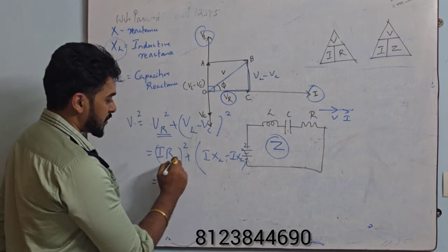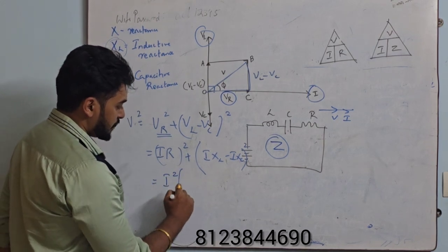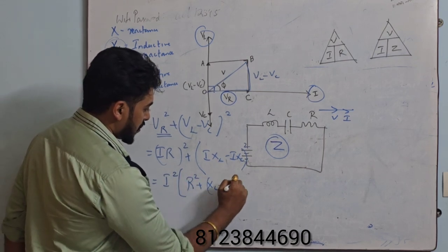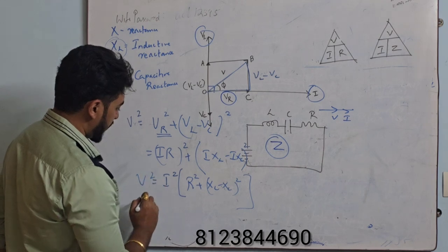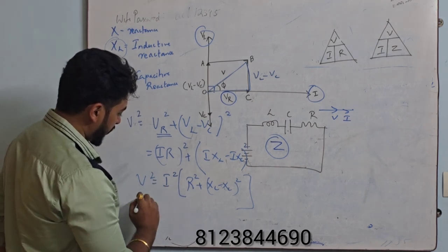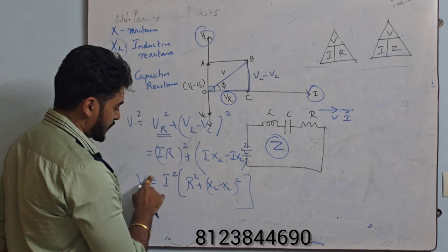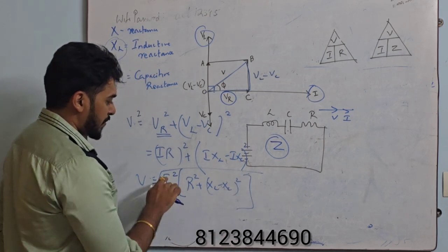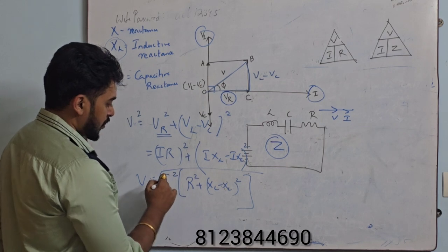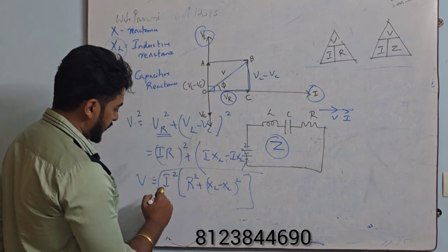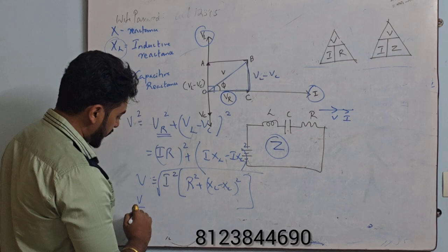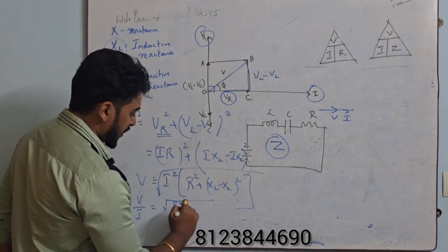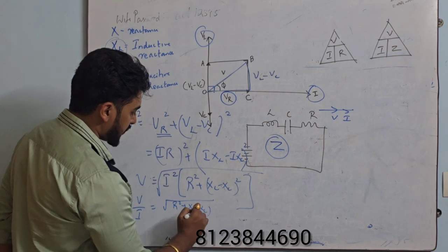Next thing, what is my IR²? I can take I² common. Then I will get R² + (XL - XC)² whole square. And this equals V². So I will be getting V equals root of all of these things. If I remove the square, I can take root. Root of I² will become I, and that I will bring it down. So V/I is what?